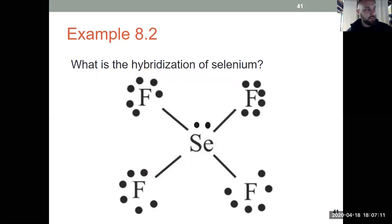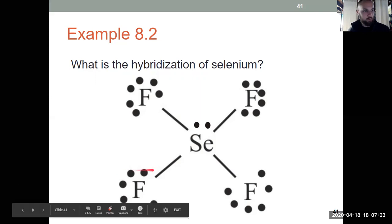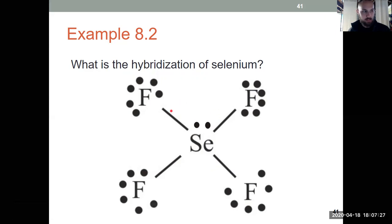Looking at this structure, what's the hybridization of selenium? Well, we're given the Lewis structure, so this is a nice, easy problem. I just have to count the regions of electron density. There's one, two, three, four bonds, plus one lone pair, means I have five regions of electron density.